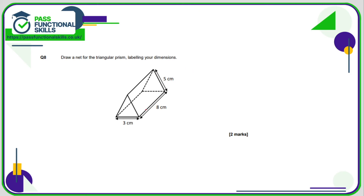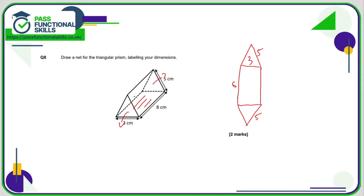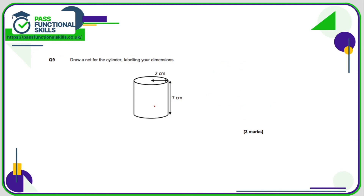Question number eight: we need to draw a net for the triangular prism. I'd start with the rectangular base, which is three by eight. We've got a triangle on the top and a triangle on the bottom, so we fold those out — two triangles with a slanted height of five. We also have two rectangles: this rectangle is eight by five, and it's attached to the rectangular base. If you're measuring with a ruler you won't have the issues I've got doing it freestyle. There is my net of this triangular prism.